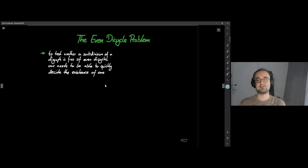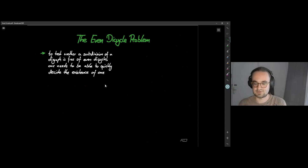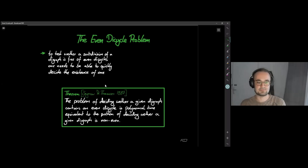We come to the actual motivation: the even directed cycle problem. Given some digraph, you subdivide some edges and want to know — is this a good subdivision? Did I get rid of all the even directed cycles? To test this, you need to be able to check for the existence of an even directed cycle in your digraph. It turns out these two problems — deciding whether there exists a subdivision such that all even directed cycles are gone, and whether there is at least one even directed cycle — are polynomial time equivalent.